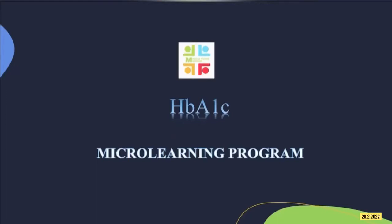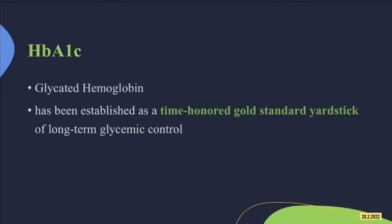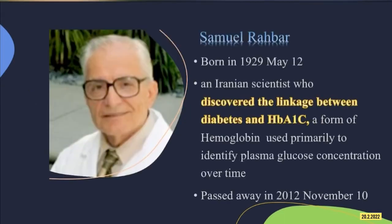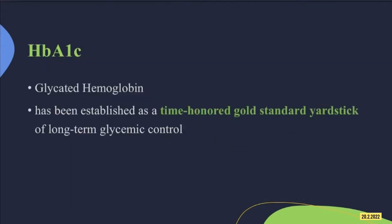Welcome to MFM Micro Learning Program. Today, I would like to talk about HbA1c. HbA1c means glycated hemoglobin, resulting from forming a covalent bond between a glucose molecule and the beta chain of hemoglobin. It is established as a gold standard test for long-term glycemic control.